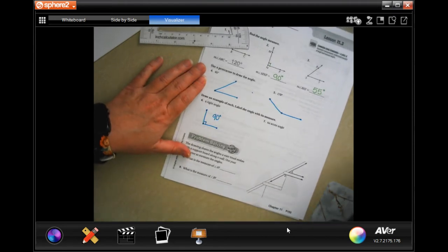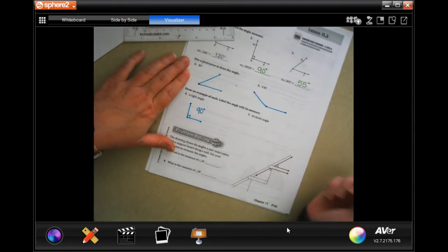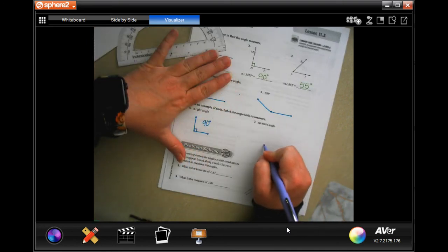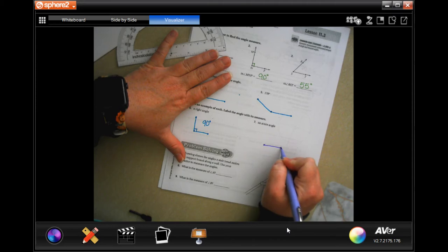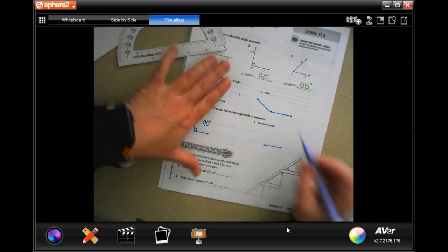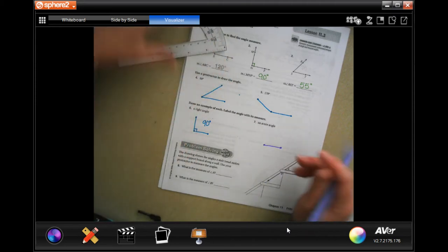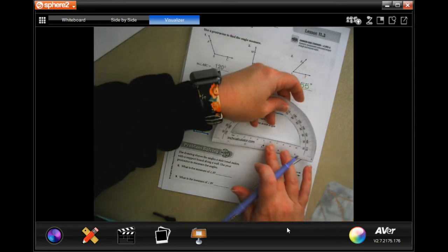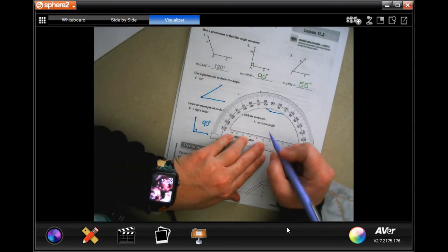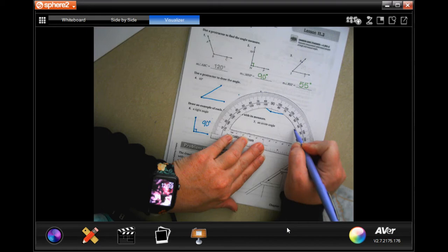Now the next one says an acute angle, so any angle that is smaller than 90 degrees, which at this point we know. So I'm gonna put my dot in and I'm gonna make it, let's say about 40 degrees. Done.